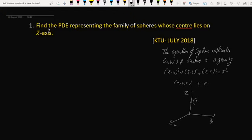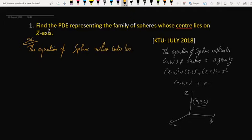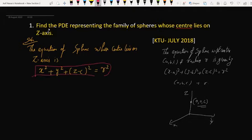Therefore, the equation of sphere whose center lies on z-axis is x² + y² + (z - c)² = r². I am calling this equation number 1.